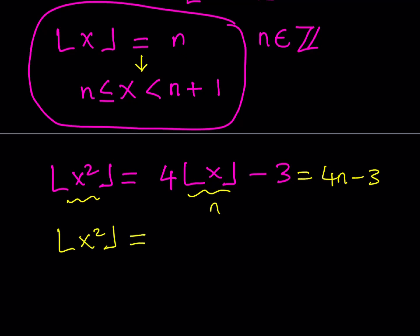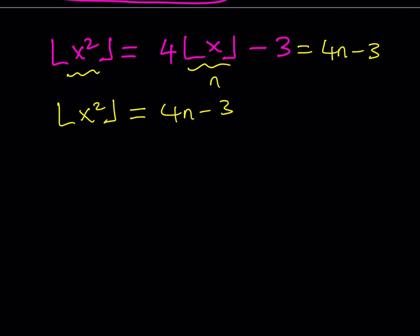The floor value of x squared equals 4n minus 3 implies that x squared is between 4n minus 3 and 4n minus 2, since if the floor value of something equals an integer, that expression inside the floor function needs to be between those two consecutive integers — a half-closed interval.